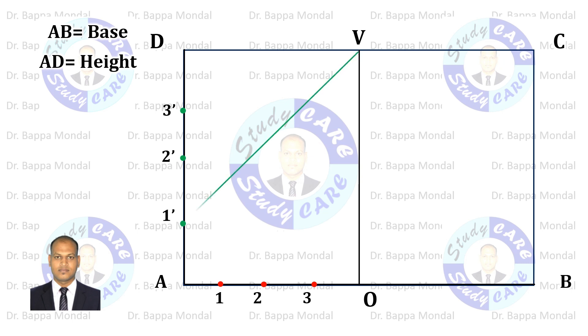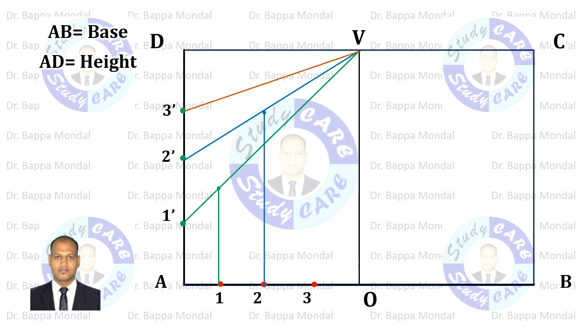Now join V1, V2, V3. Then draw a vertical perpendicular line from point 1 and extend it up to line V1. Do the same for points 2 and 3.